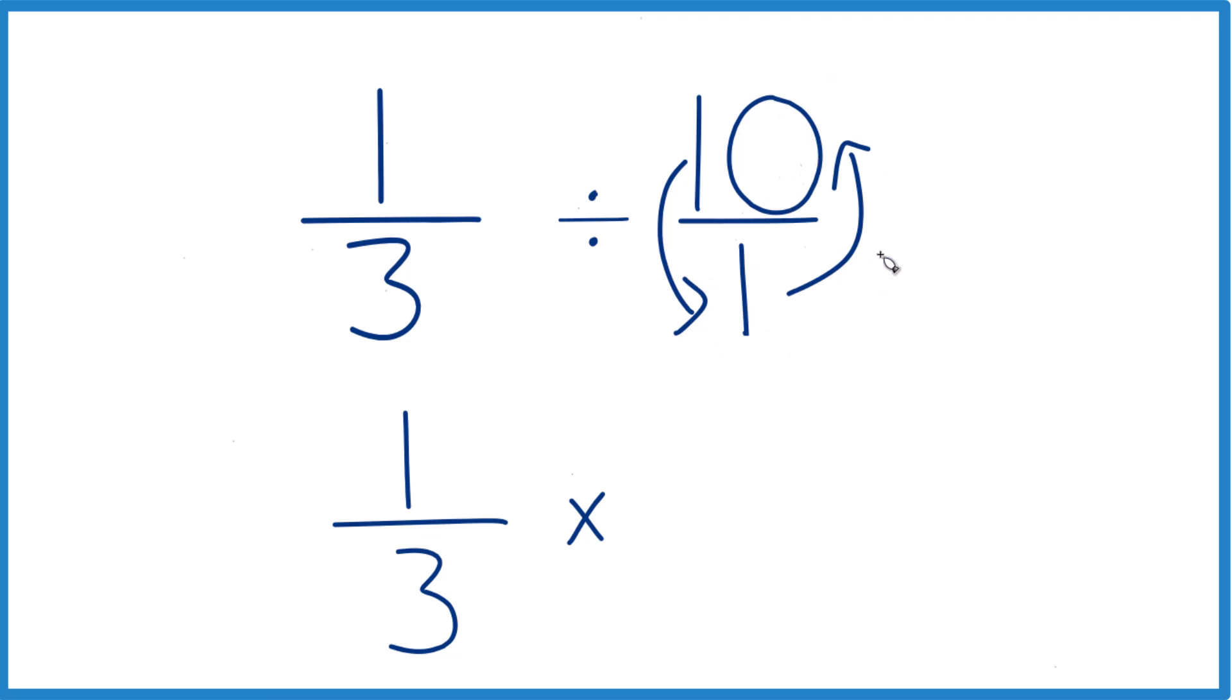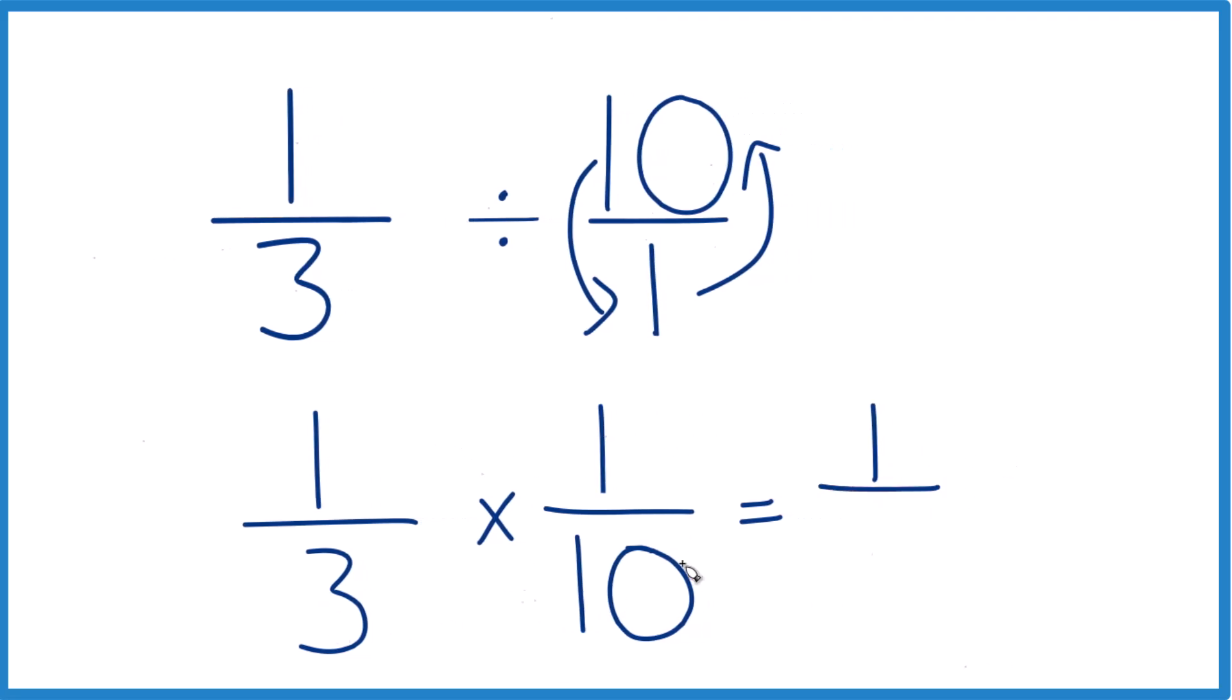So 10 on the bottom, 1 on the top. So that's 1/10. With fractions, when you multiply, it's a little bit easier because 1 times 1 equals 1, and then we multiply the denominators. 3 times 10 is 30.